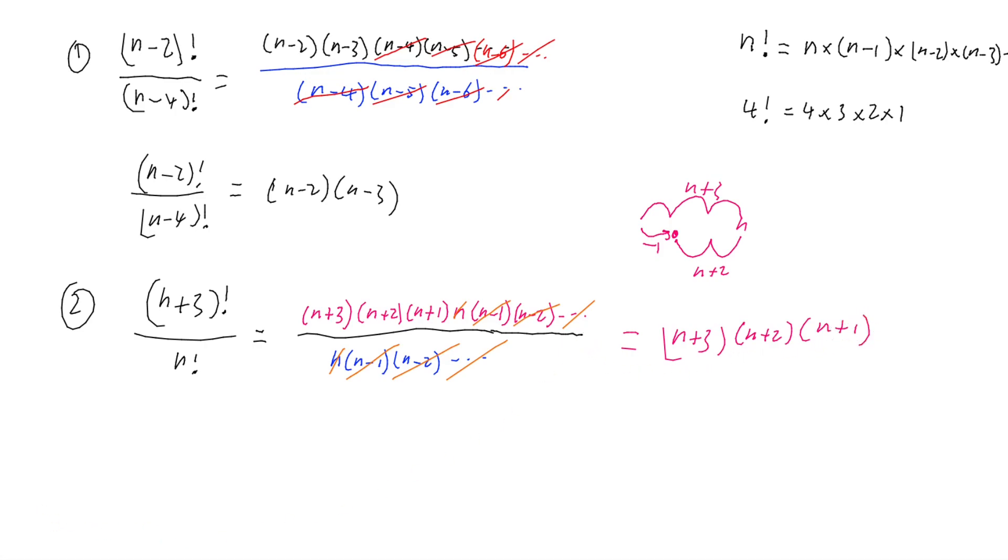Let's do one last one. This one I've got (n-2)! divided by (n+2)!. If I have a look at the numerator for this one, we're starting with n-2 and we're going to work our way down to n-3, then n-4, and so on.